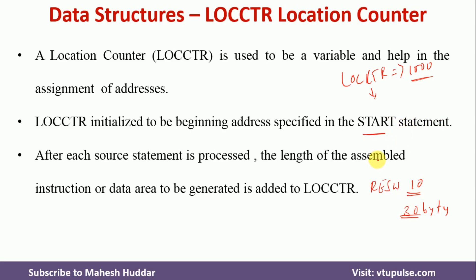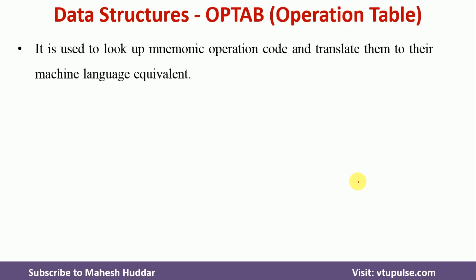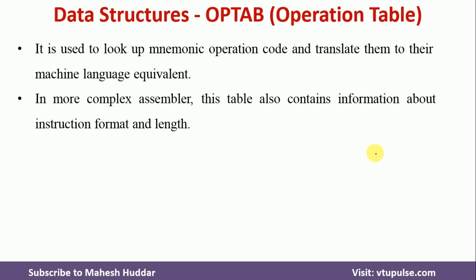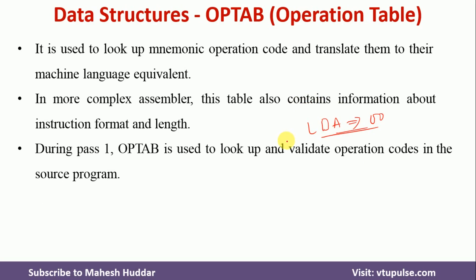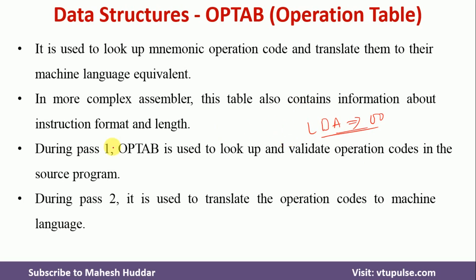OPTAB (operation table) stores the machine language equivalent for every mnemonic instruction. For example, LDA has the equivalent value 00. For every mnemonic code there is an equivalent machine language code stored in OPTAB. These entries are processed in pass one and used in pass two of the assembler — we will cover pass one and pass two assemblers in the next video.